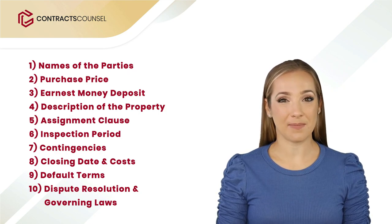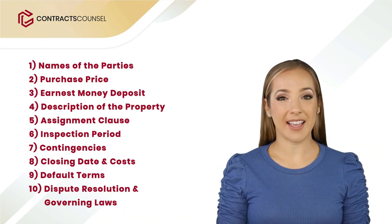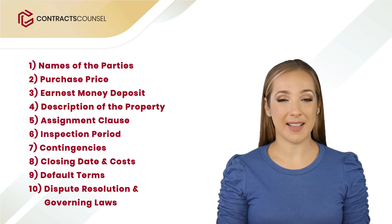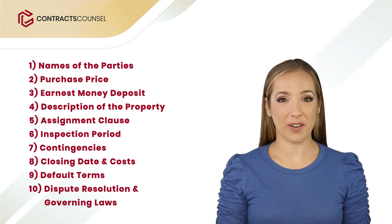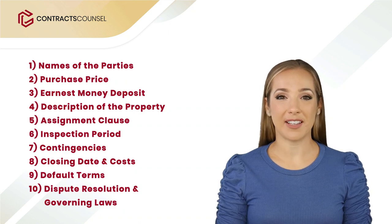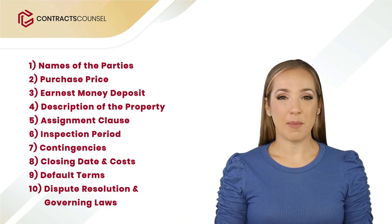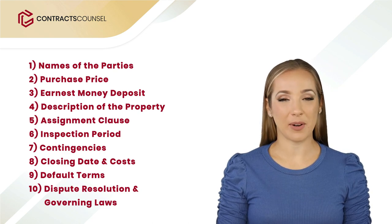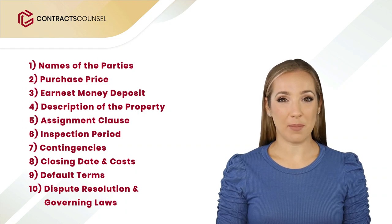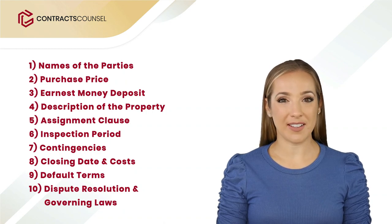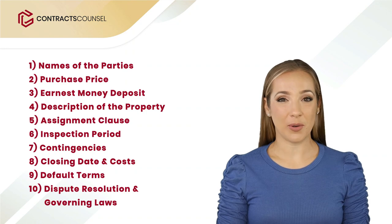Four, description of the property — this states the address of the property as well as any other identifiers. Five, assignment clause — this is particularly important in wholesaling; it allows the wholesaler the right to assign the contract to another buyer for a fee. Six, inspection period — specify a duration during which the buyer or their representatives can inspect the property. Seven, contingencies — these clauses outline what happens if something goes wrong and who is responsible for compensation.